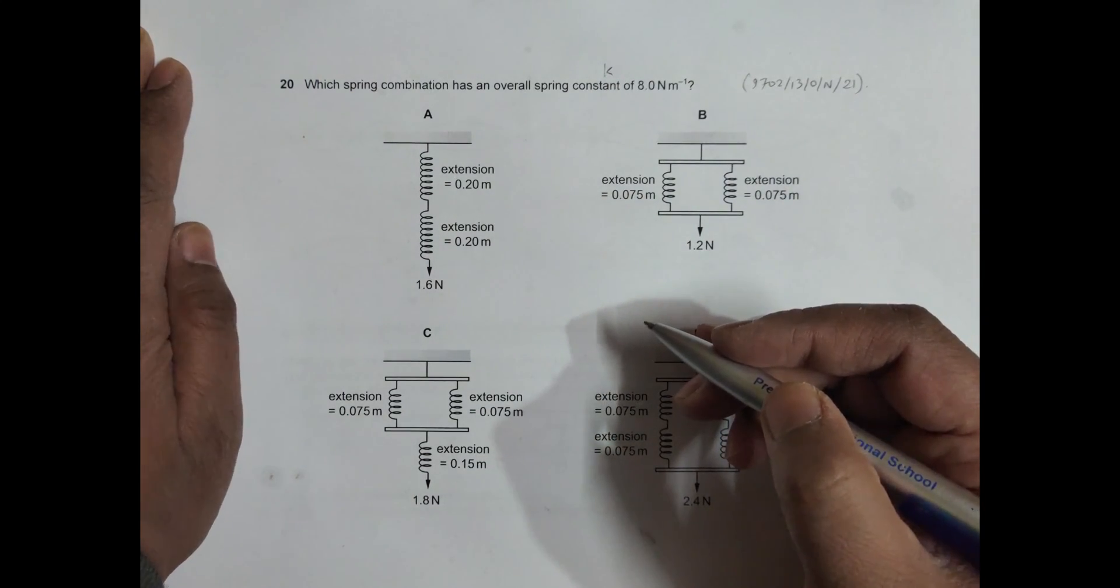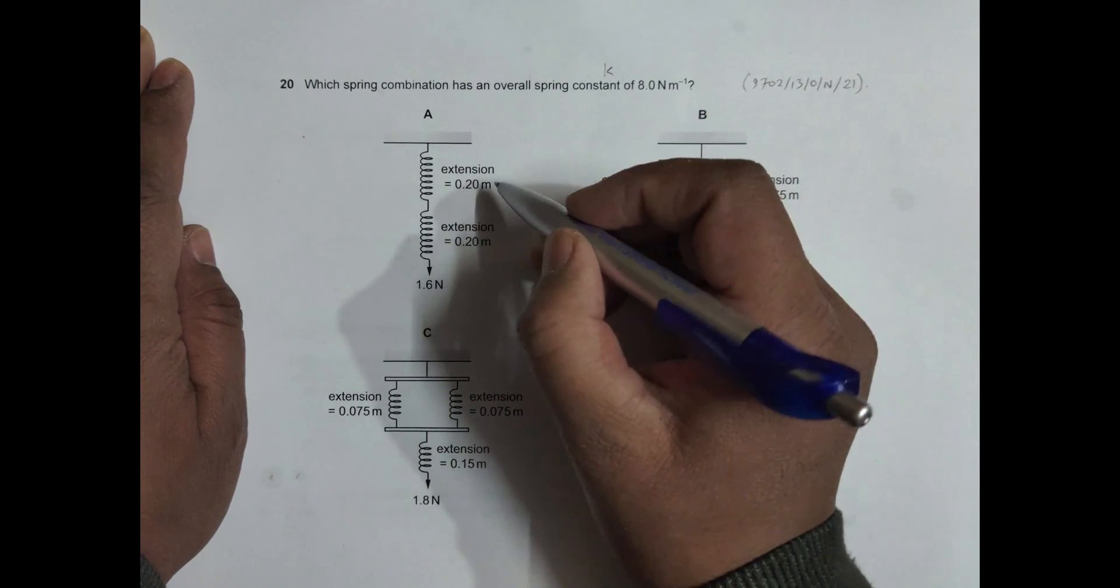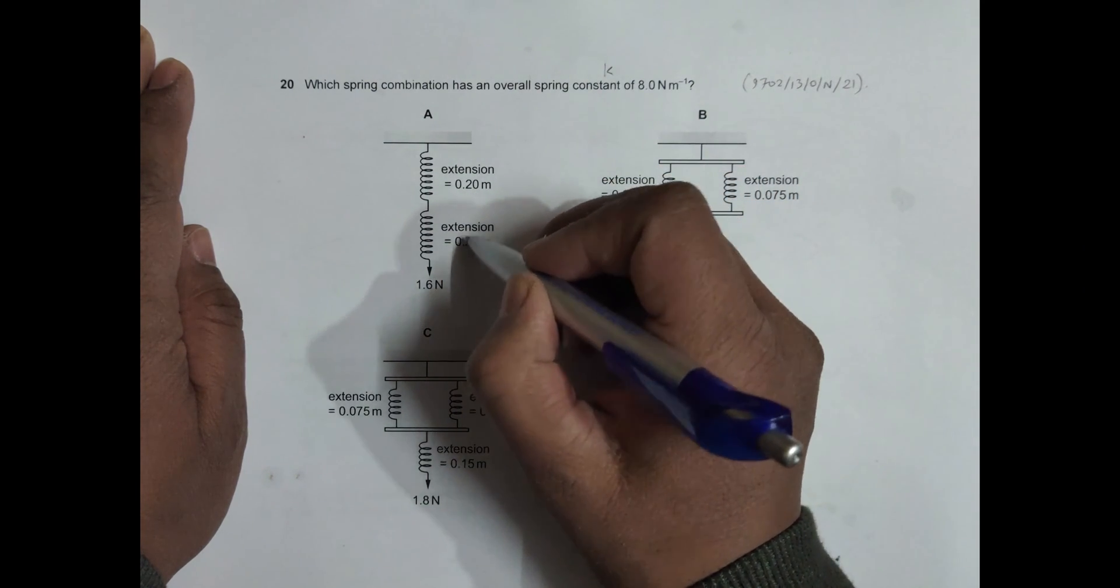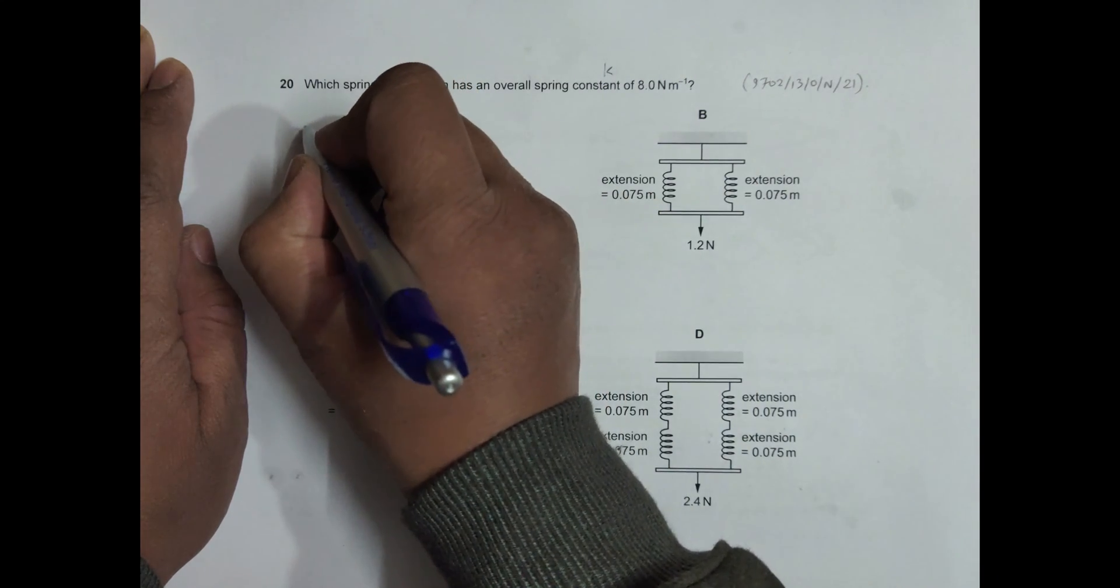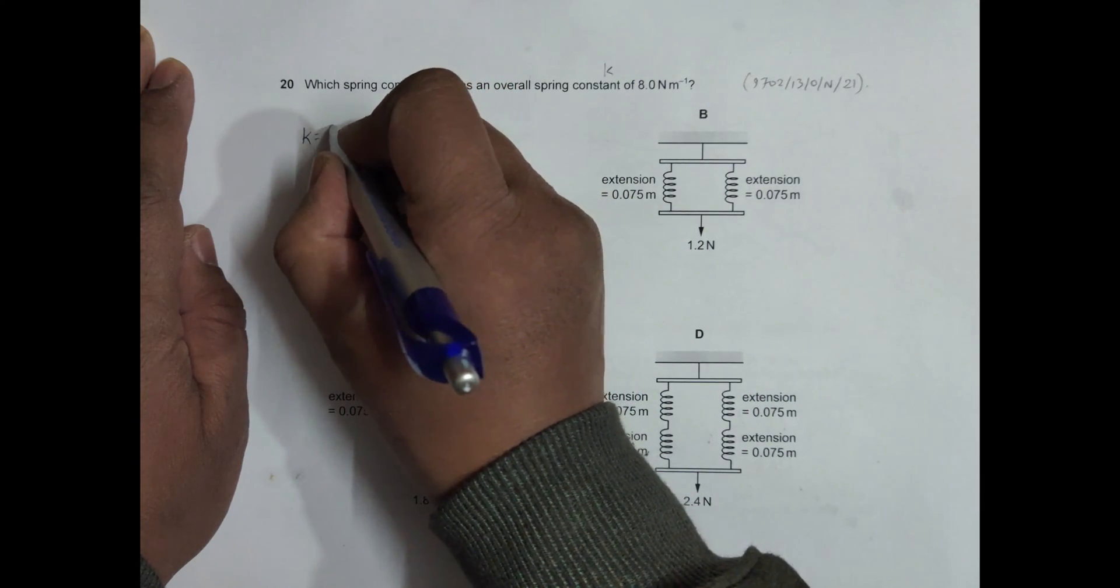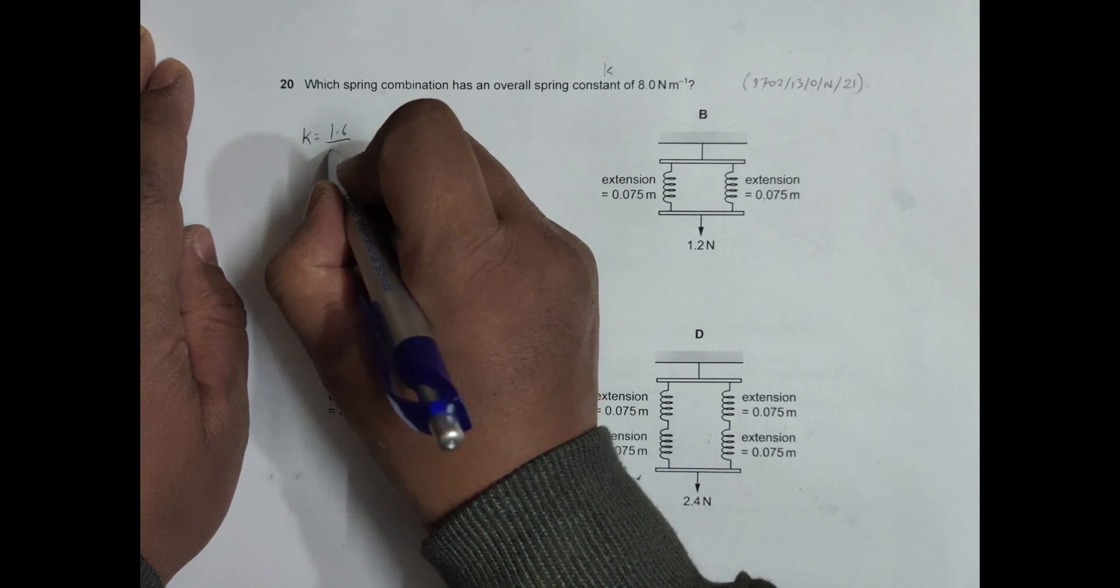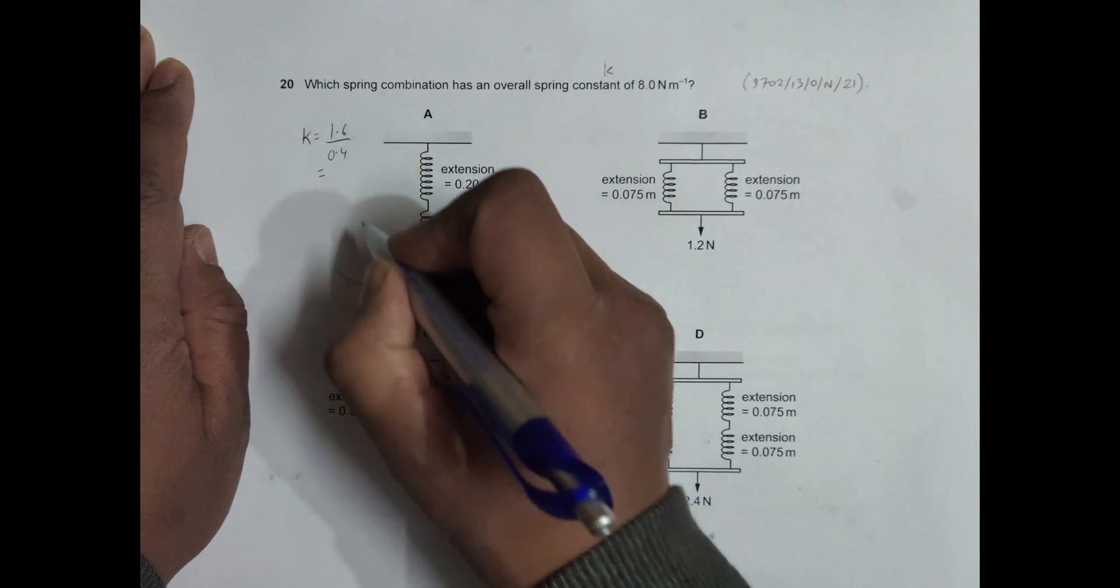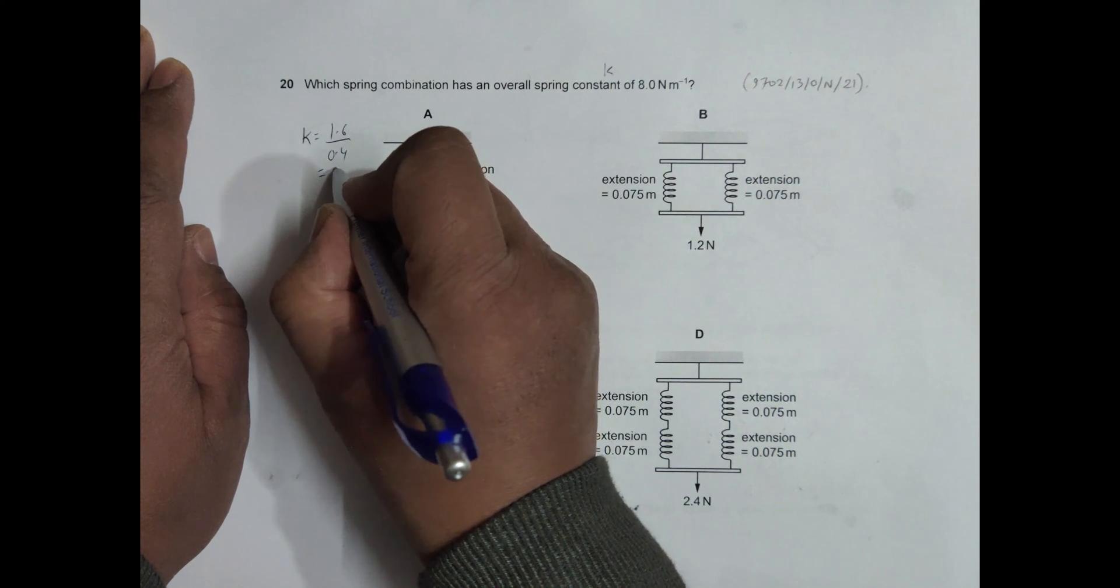So let's go into the calculations. In this arrangement we have a series arrangement here. The extension is 0.2 and 0.2, overall it will be 0.4. So the overall K is equal to overall force 1.6 divided by the overall extension 0.4. When I do it in a calculator, it is 4, 4 Newton per meter, which is not correct.